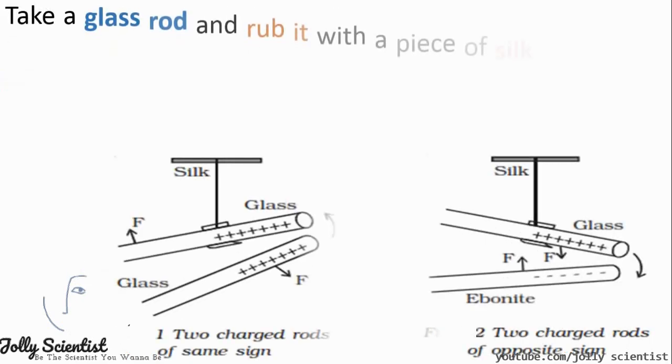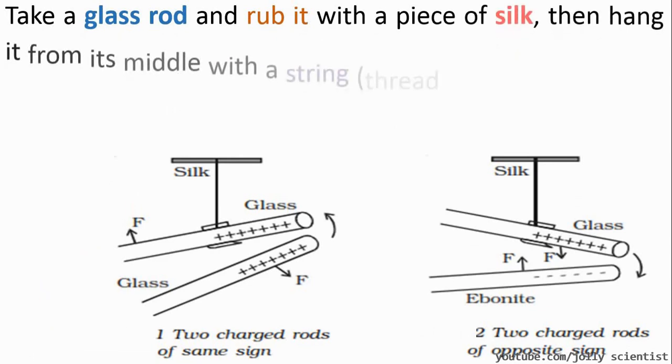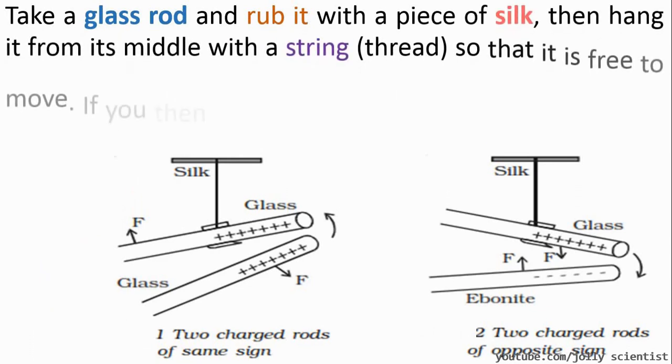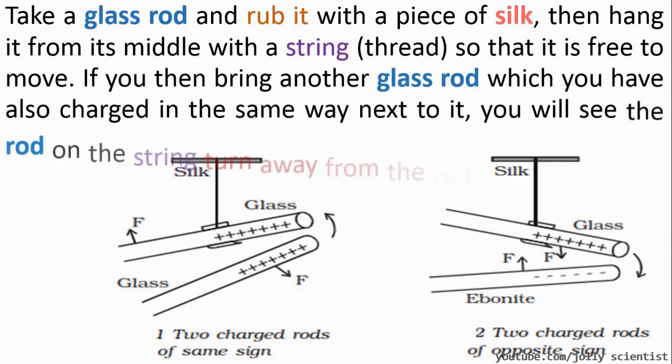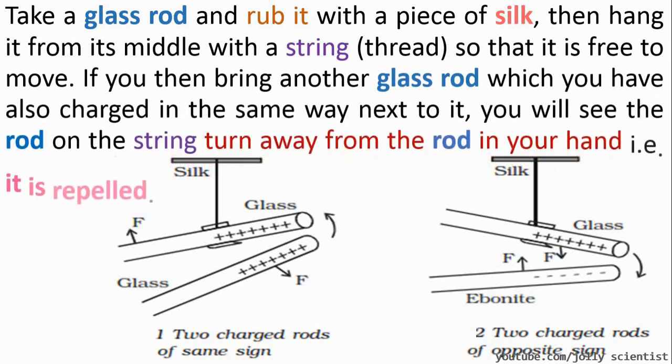First, you take a glass rod and rub it with a piece of silk and hang it from the middle with a thread or a string so that it's free to move. If you then bring another glass rod, which you have also charged the same way next to it, you will see that the rod on the string turns away from the rod in your hand. That is, it repels.